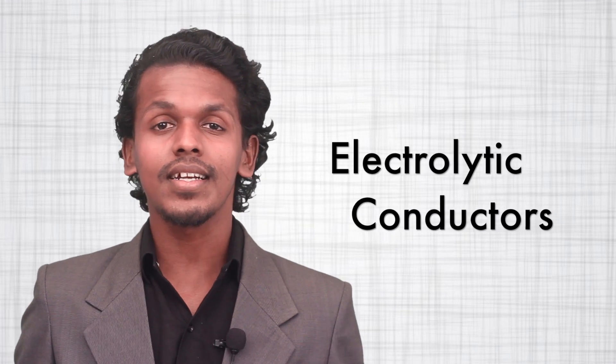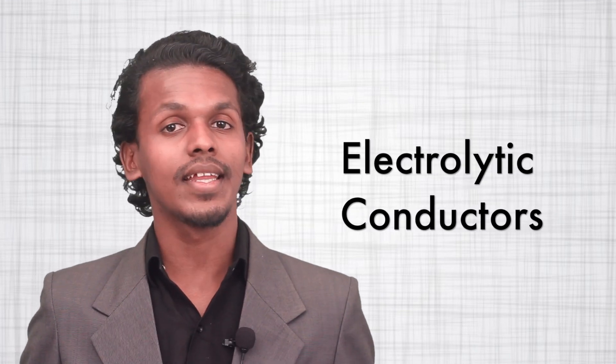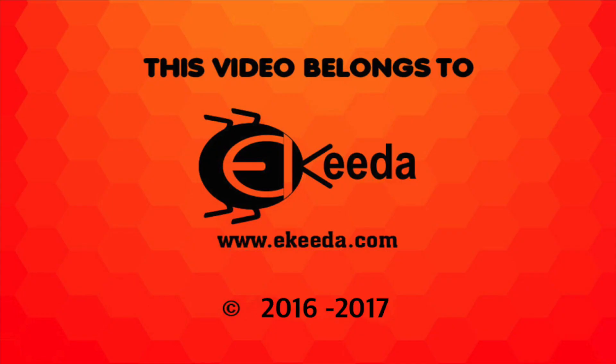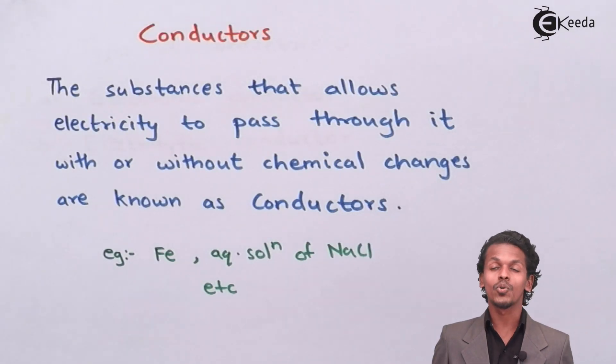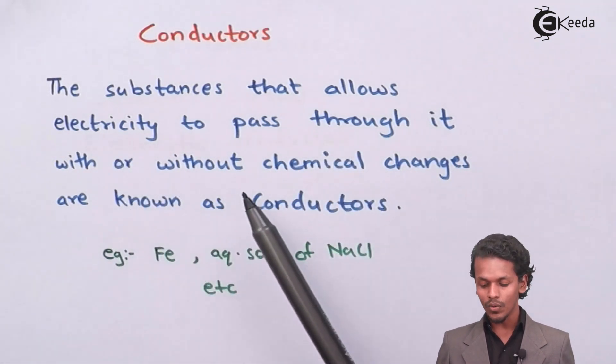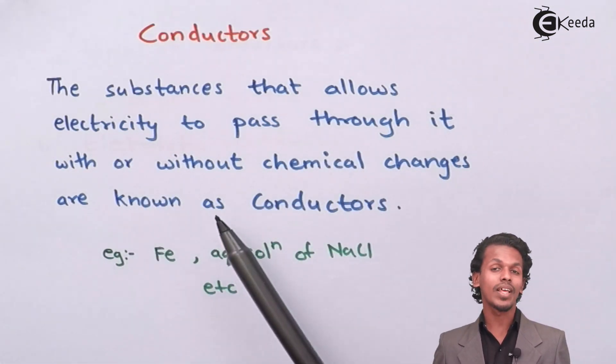In electrochemistry, conductors play a very important role in conduction of electricity, and what are those and how they are being classified, let us see. To understand conductor we should know the definition: the substance that allows electricity to pass through it with or without chemical changes are known as conductors.